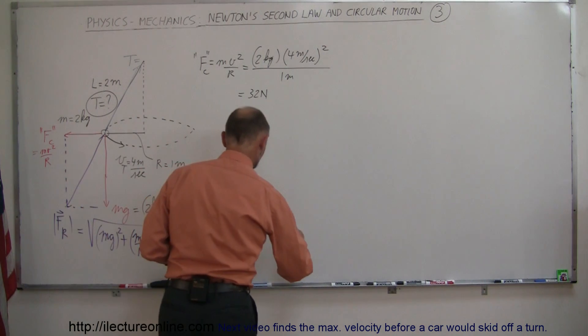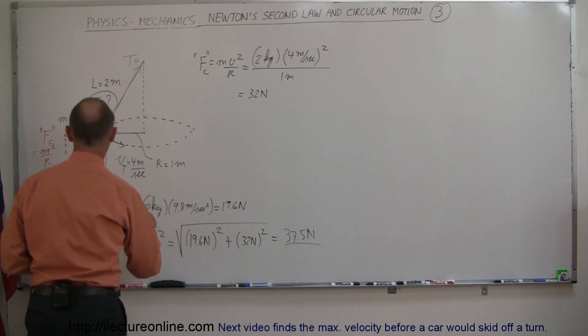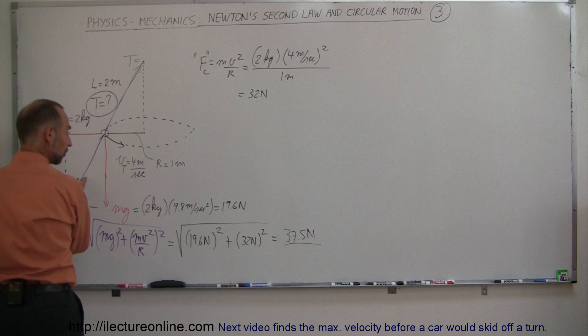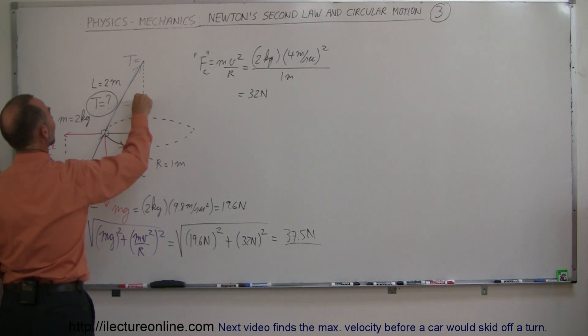So 37.5 newtons. The resultant force of both the centrifugal force and the weight is 37.5 newtons, which means the tension is also 37.5 newtons.